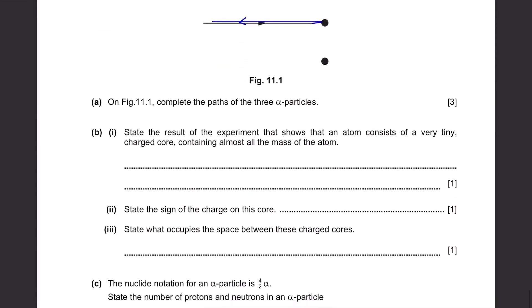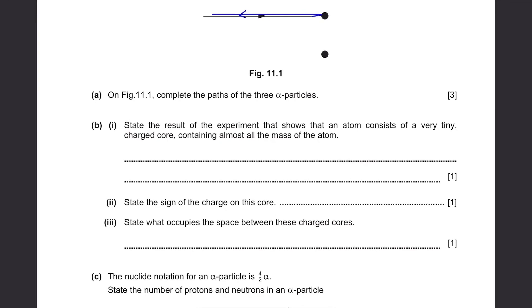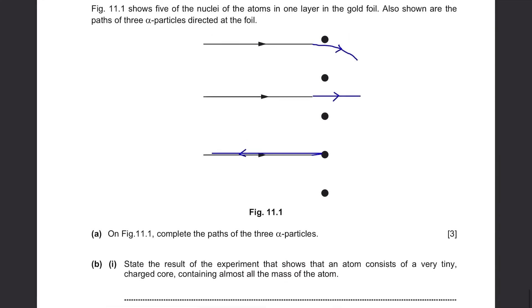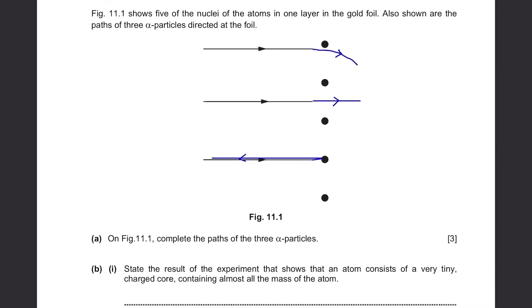Part B. State the result of the experiment that shows that an atom consists of a very tiny charged core containing almost all the mass of the atom. How do we know from this diagram that the mass is concentrated at the centre of the atom? Well, you can use the example of the bottom one where it is completely deflected because of the nucleus of the atom.